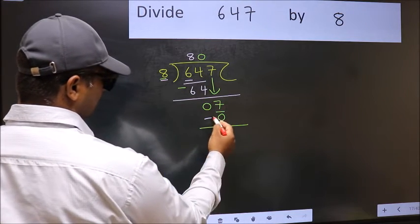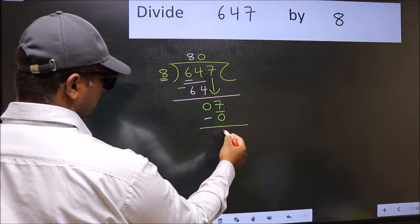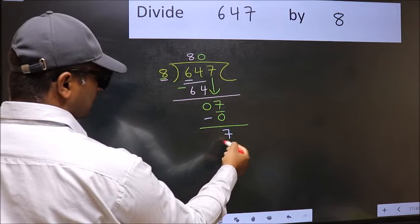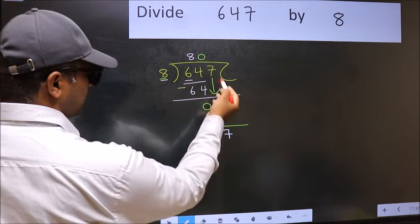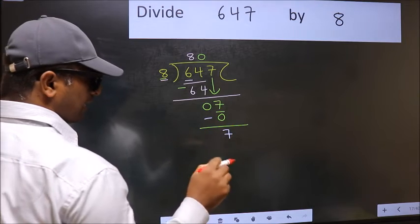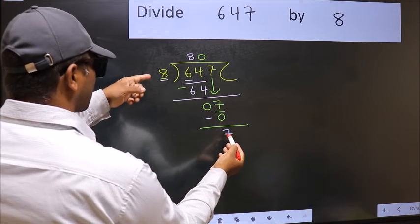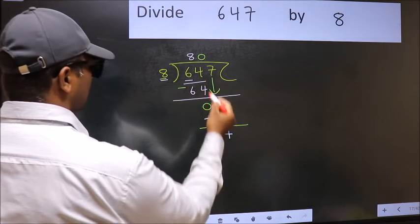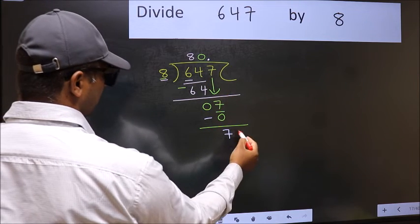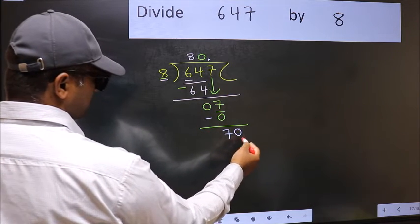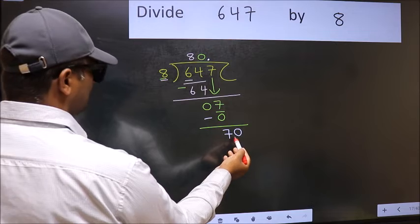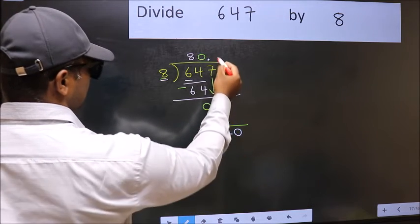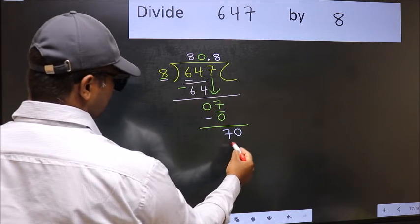Now you should subtract: 7 minus 0 is 7. Over here we did not bring any number down, and 7 is smaller than 8, so now you can put dot and take 0, so 70. A number close to 70 in 8 table is 8 times 8, 64.